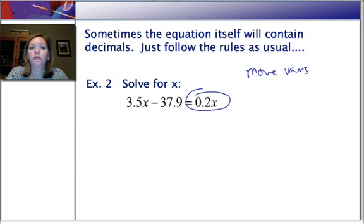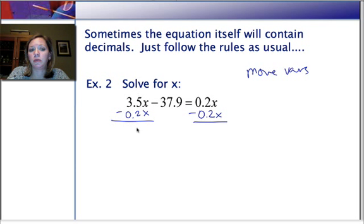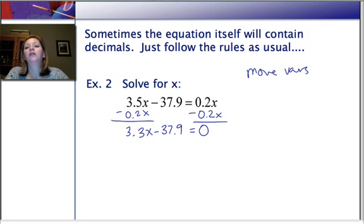I notice that 0.2x is smaller than 3.5x. So I'm going to start by moving that term. So we're going to do that by subtracting 0.2x from both sides. If I line it up nicely so that my decimals align, it's easier to do. We don't have to pull out our calculator. 5 minus 2 is 3. 3 minus 0 is 3. And our decimal lines up. So that's 3.3x - 37.9. But what's left over here on the right? 0.2x - 0.2x is 0. There's something there and it's 0, right?